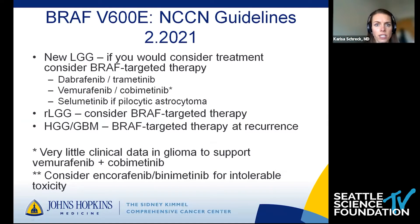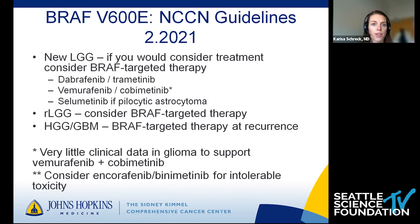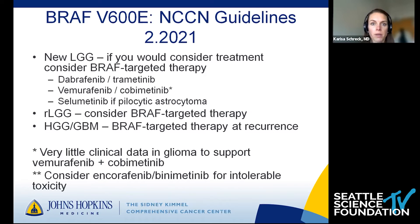The NCCN has guidelines for this. If you have a patient with a new low-grade glioma and you would be considering treatment, think about a BRAF-targeted therapy. The two combinations listed are Dabrafenib and Trametinib, or Vemurafenib and Cobimetinib. If it's a pilocytic astrocytoma, remember most are driven by the fusion, so think about Selumetinib MEK inhibitor monotherapy. For other recurrent low-grade and high-grade glioma with a V600 mutation, think about targeted therapy at recurrence. Expert commentary: we really don't have a lot of data in glioma to support Vemurafenib and Cobimetinib — I don't ever choose this combination if I can help it, as the brain metastasis data were quite a bit weaker for that combination in melanoma.